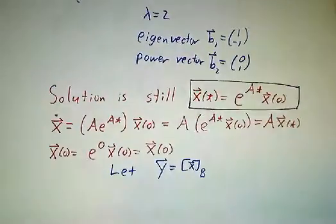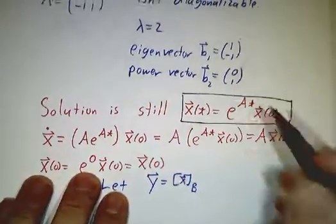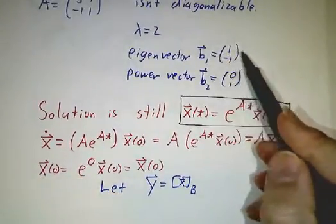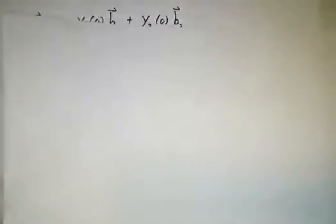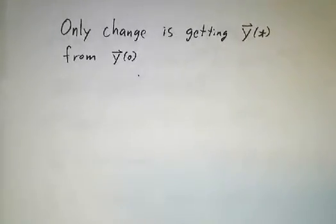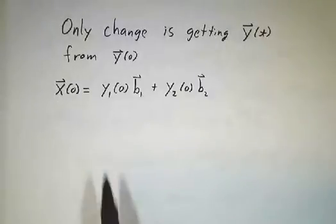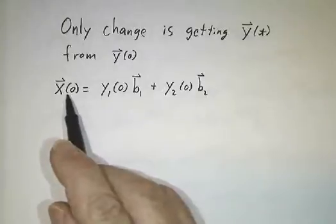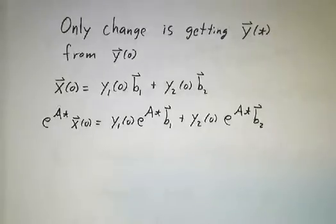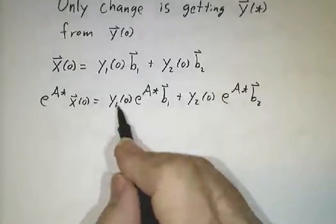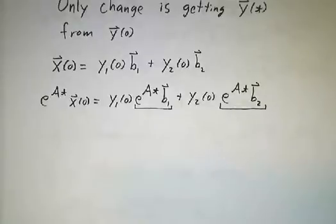And as always, we're going to let y be the coordinates of x in the b basis, where now b isn't the basis of eigenvectors. It's the basis of one eigenvector and one power vector. The only difference in the diagonalizable case is how we go from y(0) to y(t). And we do this by just multiplying through by e^(At). You see x(0) is y₁(0)b₁ plus y₂(0)b₂. If we hit both sides of the equation by e^(At), well, we need to understand what e^(At) does to the first eigenvector and what it does to this second power vector.